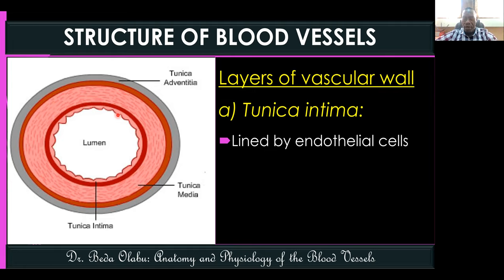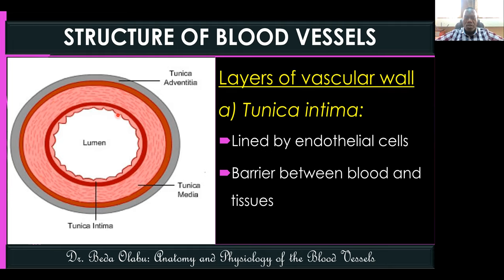The endothelial cells form a barrier between blood and tissues. They also secrete vasoactive substances that can control the physiology of the blood vessel by causing vasodilation or vasoconstriction. Additionally, endothelial cells participate in the initiation of the blood clotting mechanism — so remember both their secretion of vasoactive substances and their role in activating the clotting pathway.